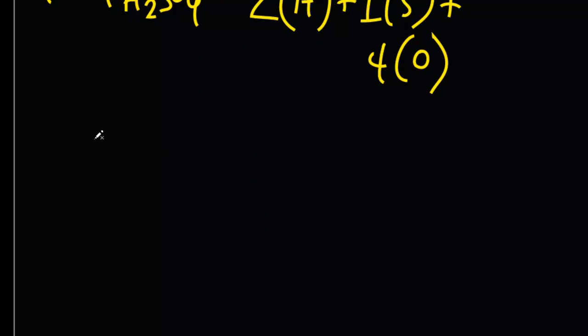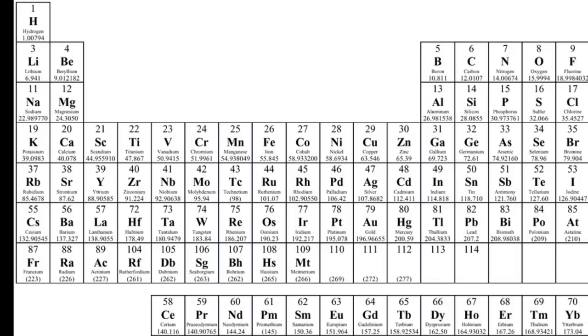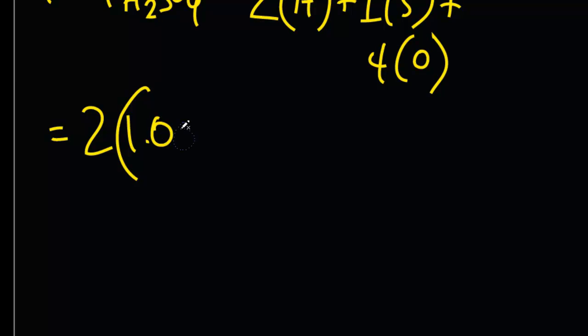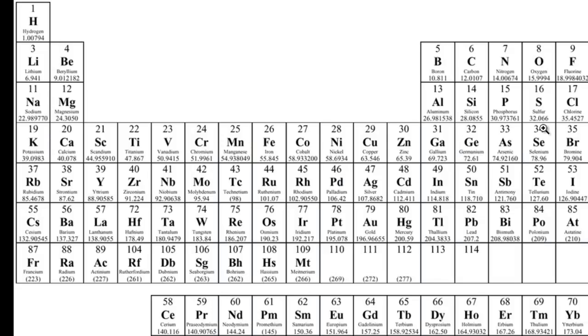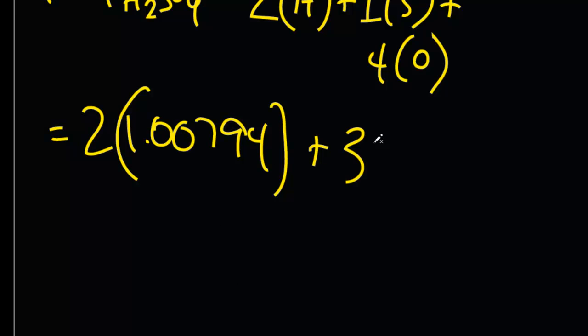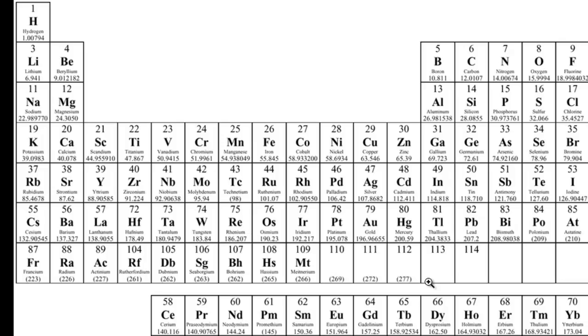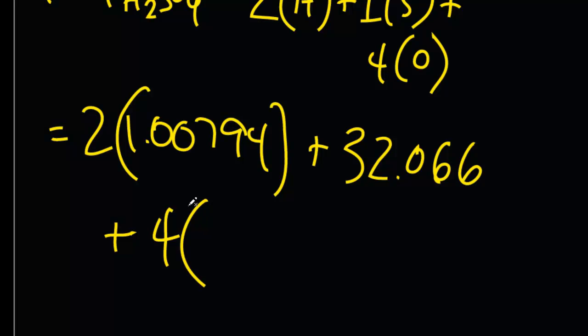Let's look it up. 2 times 1.00794 plus 1 sulfur. It's going to be around 35 if I'm not mistaken. Oh, sorry, 32. 32.066 - goes to show you never try to memorize a periodic table. You should know how to use it. If you try to memorize all those numbers, you will make a mistake like I just did. Because 35 is approximately the atomic weight of chlorine and that's none of this problem. And you get the point. So what's oxygen? Oxygen is 15.9994 grams per mole.